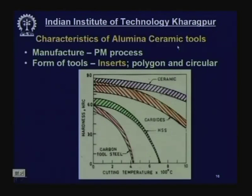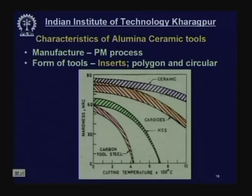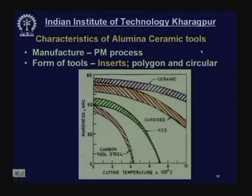Here are the characteristics of alumina ceramic tools. Manufacture is by powder metallurgy: alumina powders of 1–10 microns are ball milled to appropriate particle size, compacted in a suitable die with a punch — hot or cold pressed — and then sintered at high temperature, around 1550–1700°C.